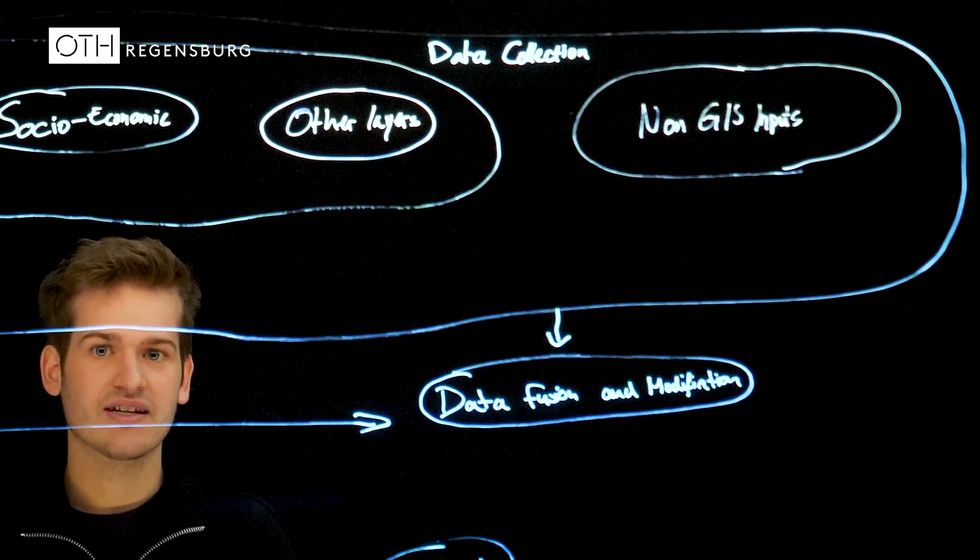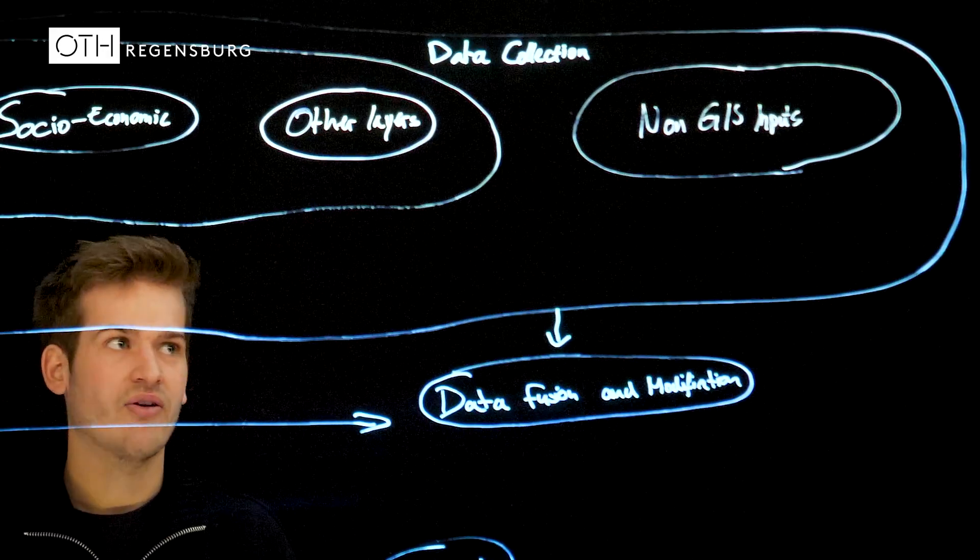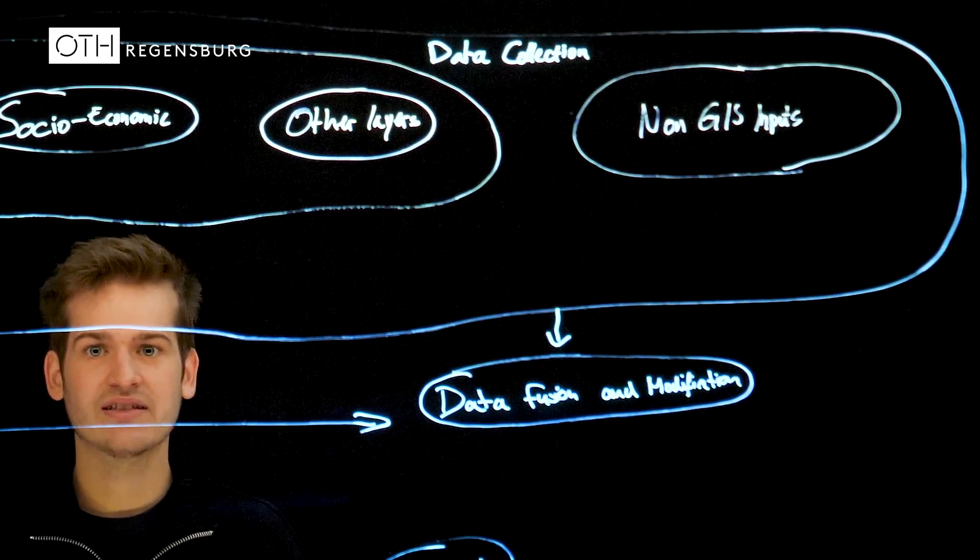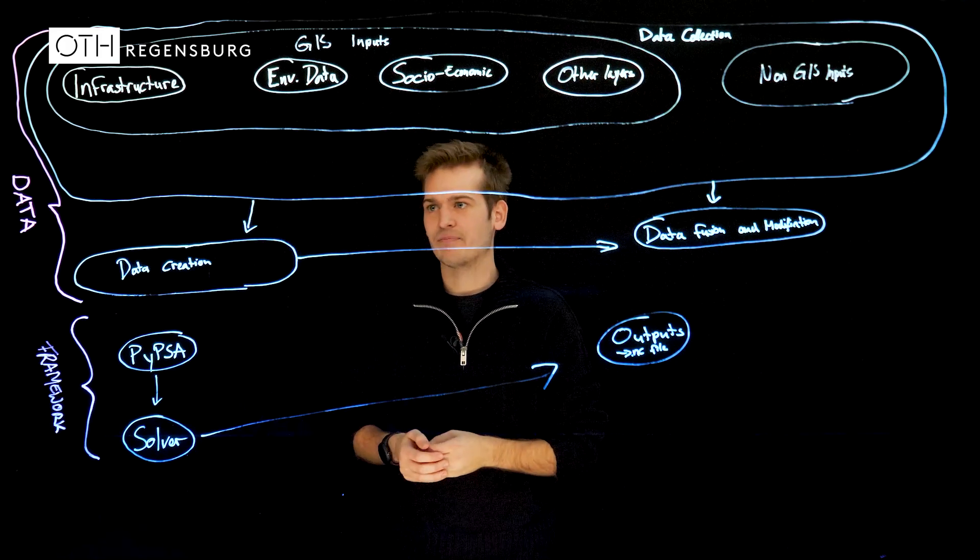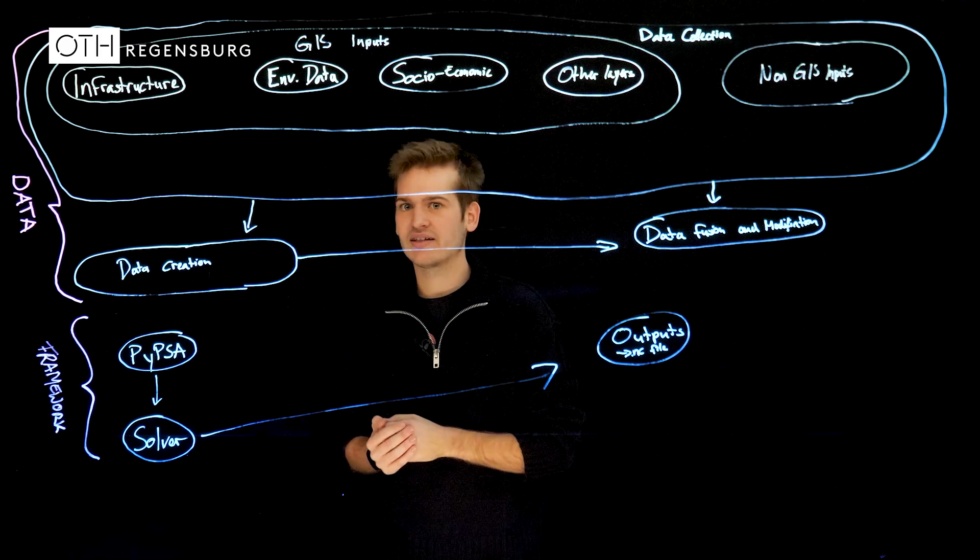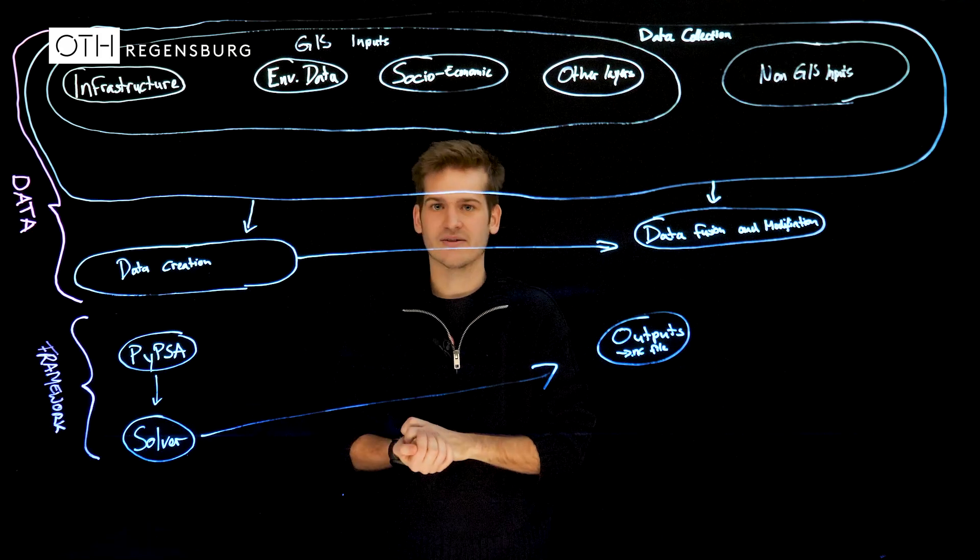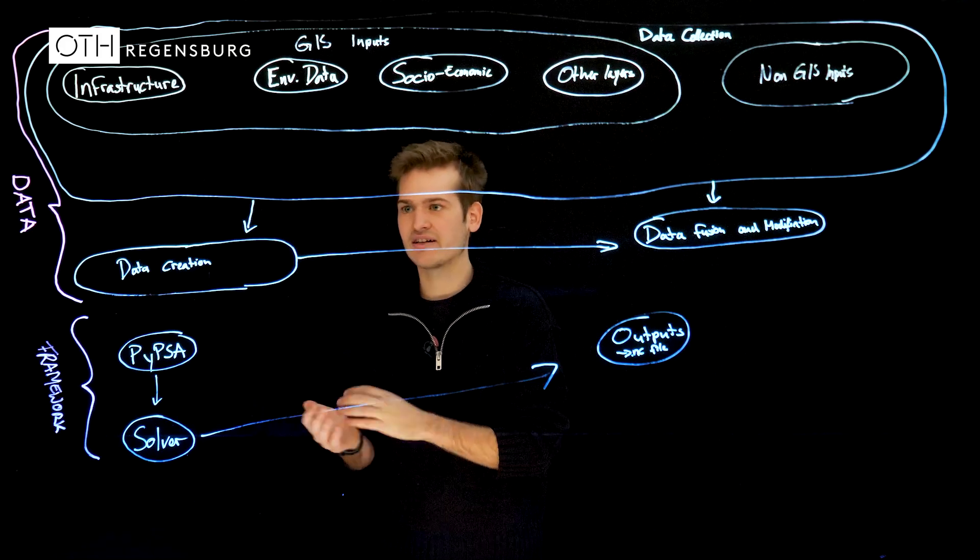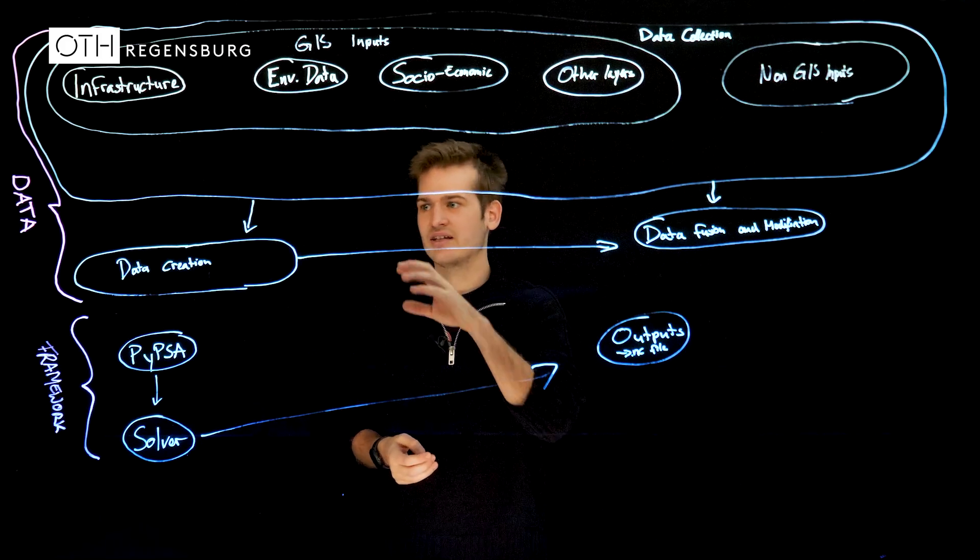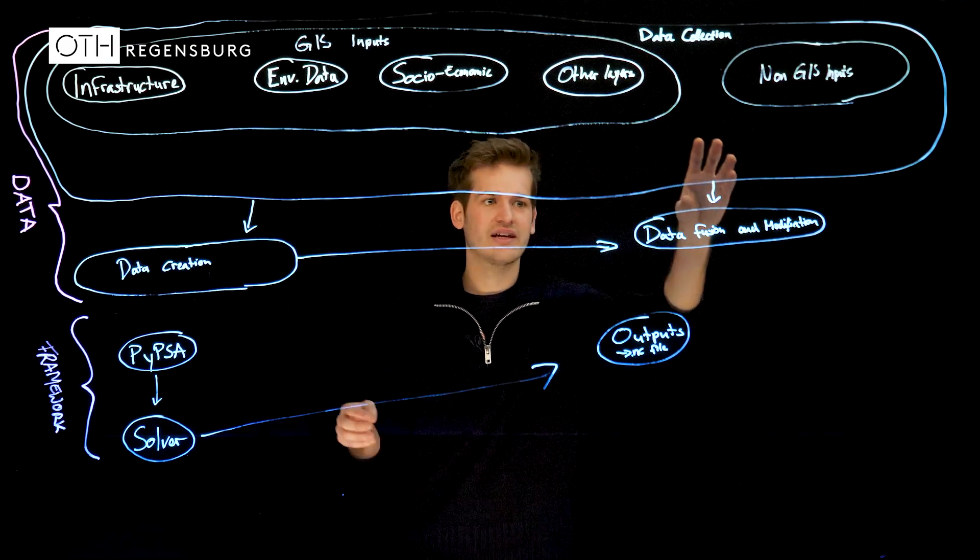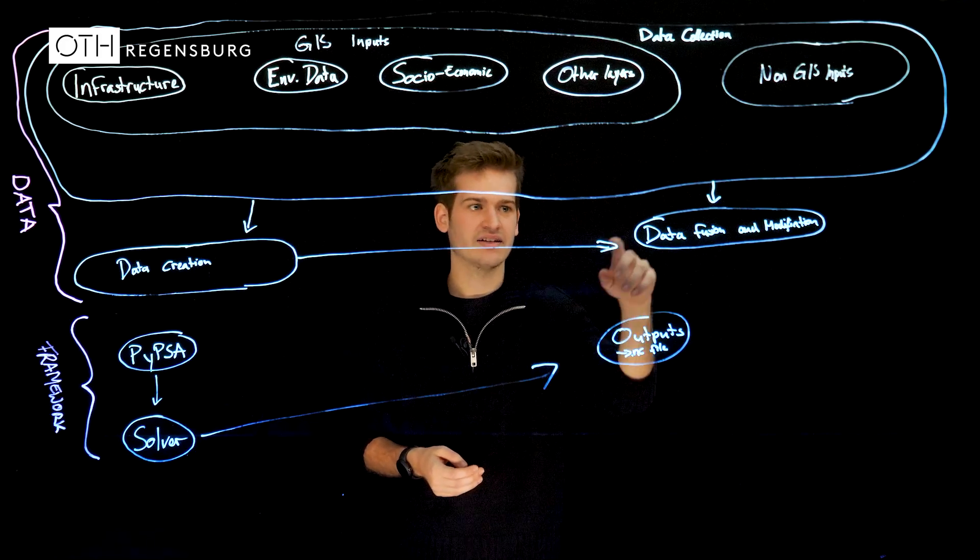The user can say what are the emission targets of this energy system or can also deliver custom data to the model and all this collected data creates new data for example the wind speed and the solar irradiation creates time series potential data like solar potentials. With the new created data and the collected data they get prepared, cleaned and merged into one single data set.